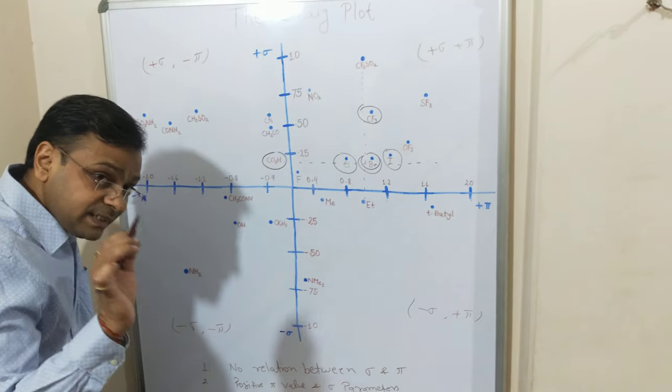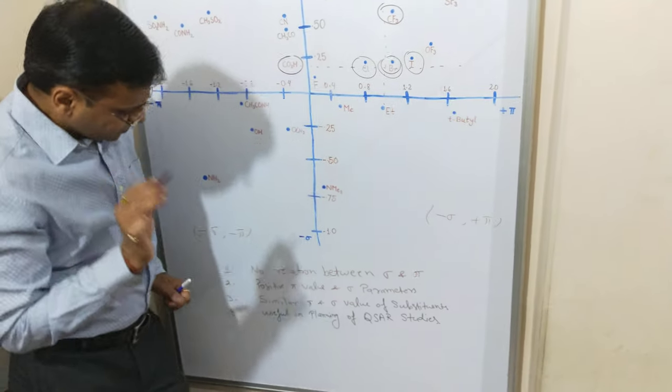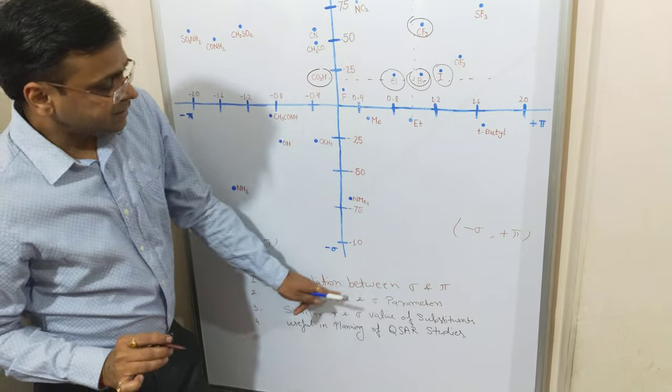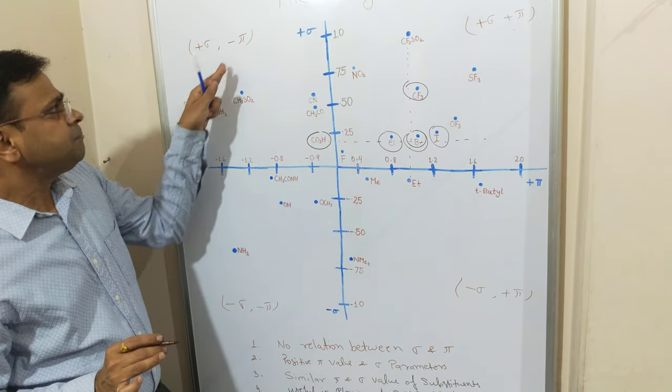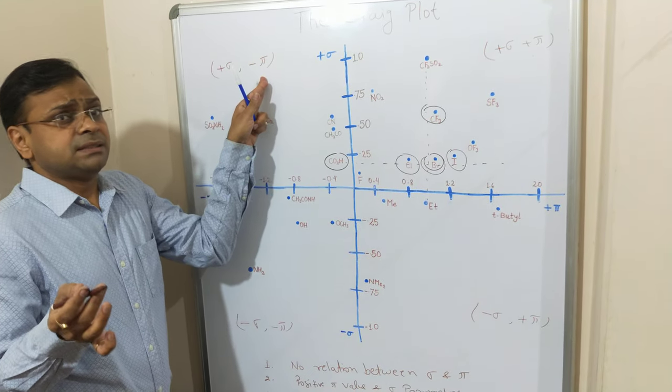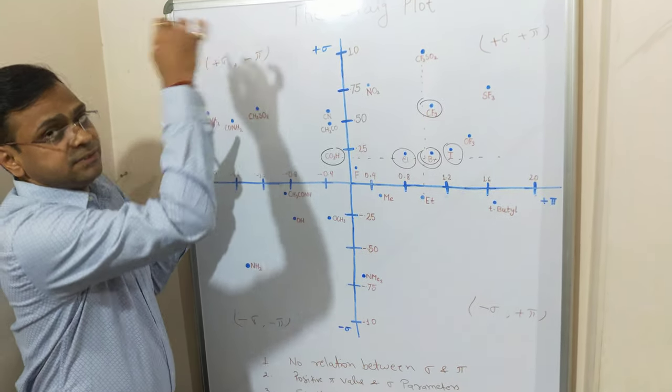What is the importance of Craig plot? First point: there is no relation between sigma and pi. As you know, sigma is another parameter. Pi is relative to hydrophobicity or partition coefficient. So both are different.